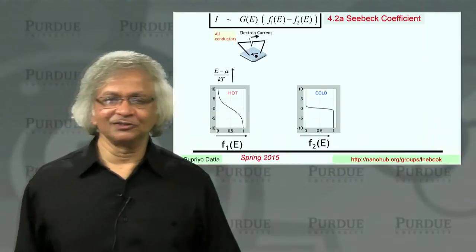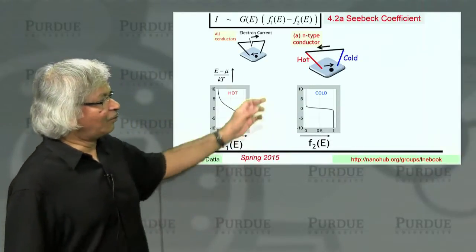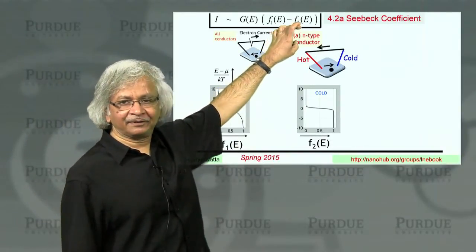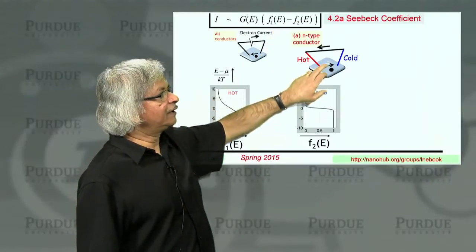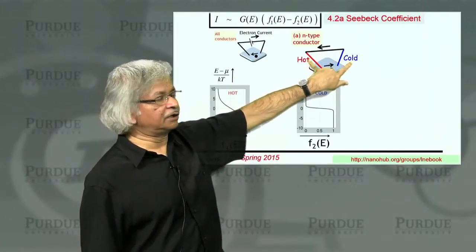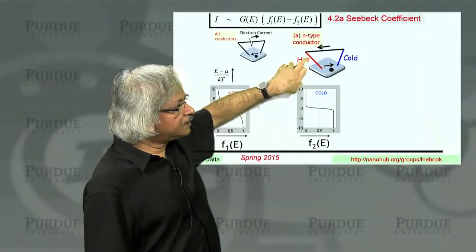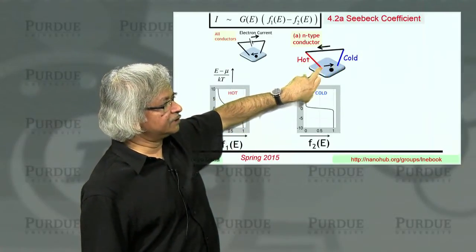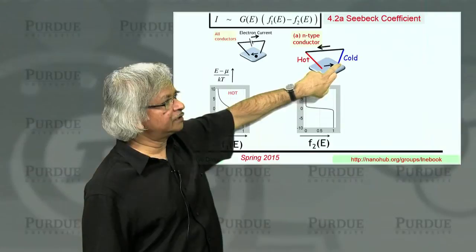So broadly speaking, there's these two types of materials. One is what you could call an N-type conductor, where when you put two probes down, one hot and one cold, electrons inside the device will flow from the hot end to the cold end.